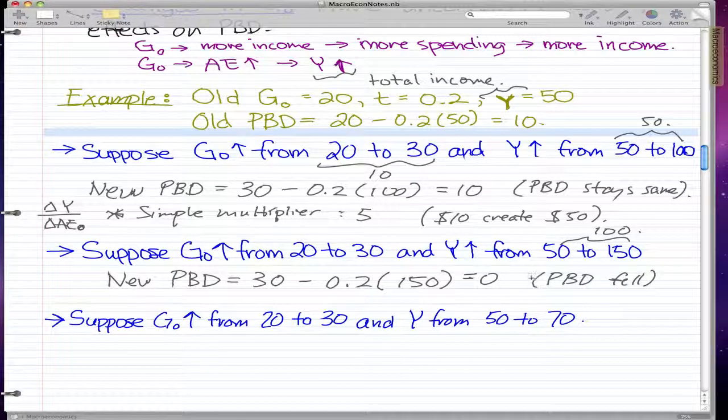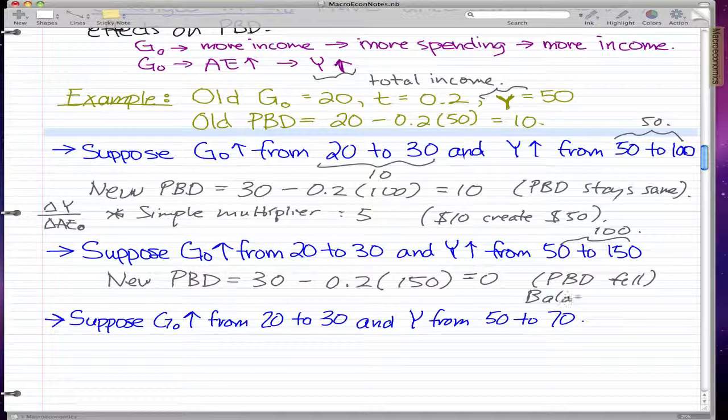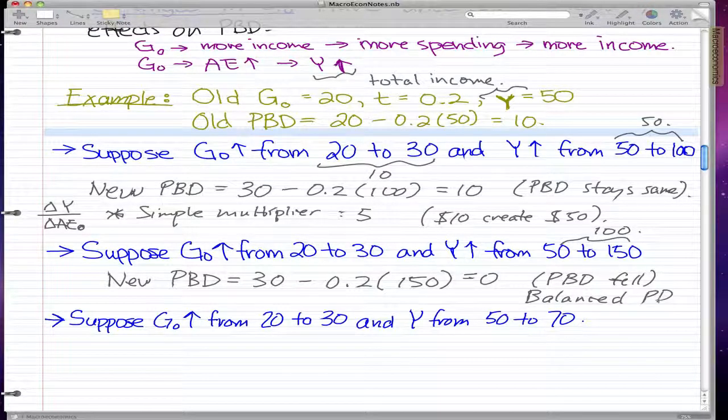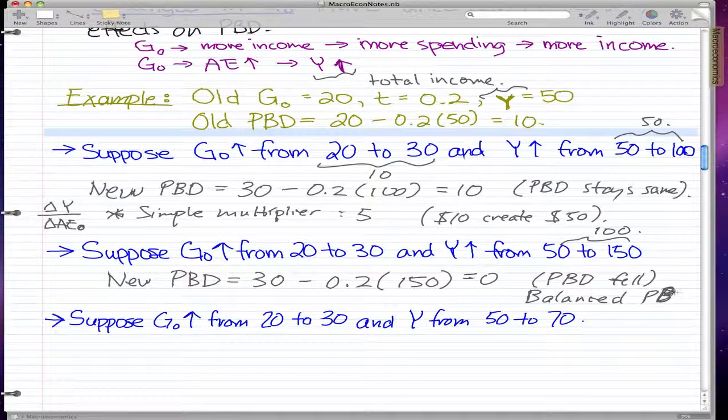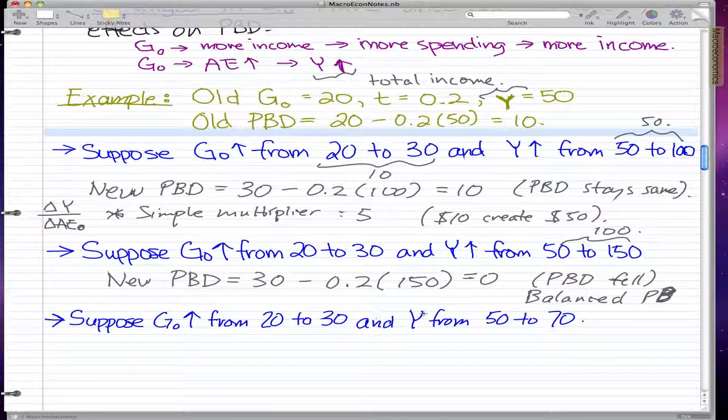The PBD fell. Now the primary budget deficit is what we call a balanced primary budget or balanced PB.